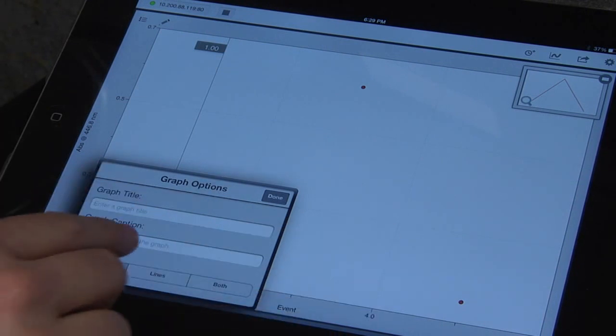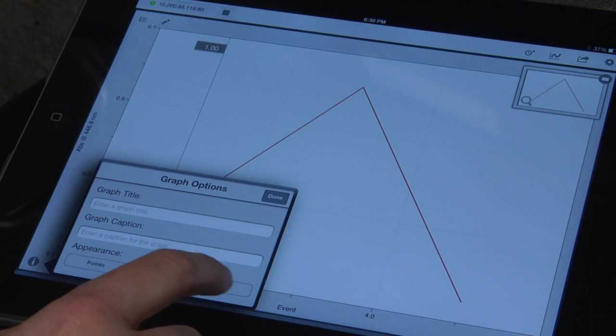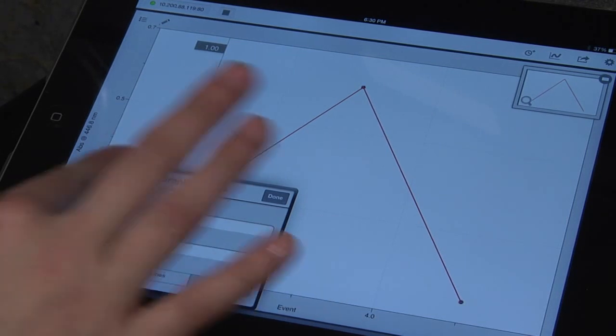It'll say graph options and you just click lines or points or both. This is also where you can make a title for your graph and label your axes.